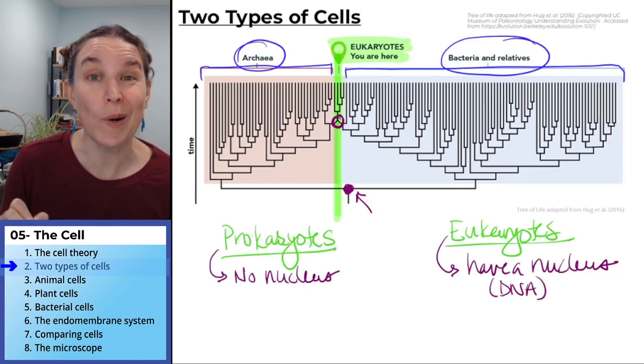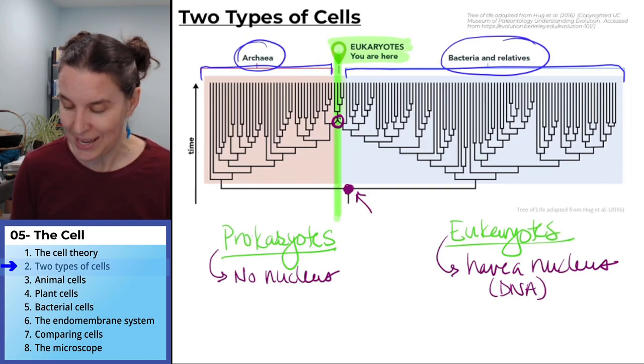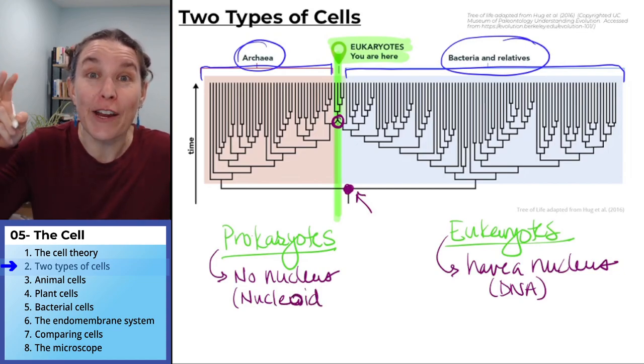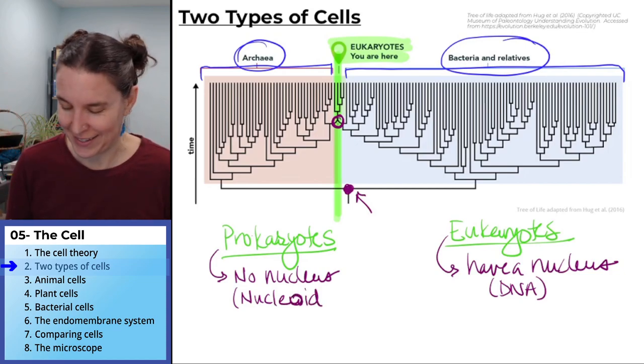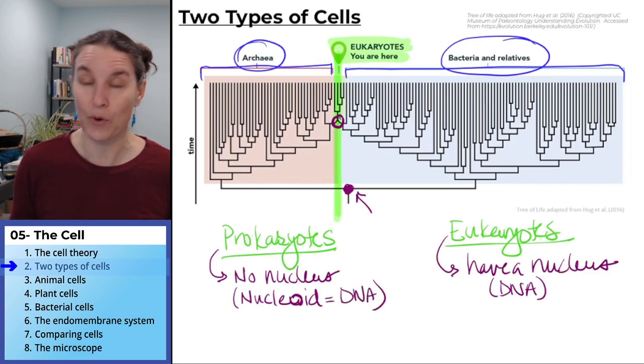It's important to know that even though prokaryotes, bacteria, archaea do not have a nucleus, they do have DNA. They have instead, it's called the nucleoid. And it's the area where the DNA lives. Nucleoid is where the DNA is in a prokaryote.